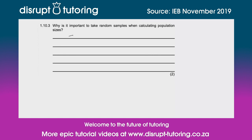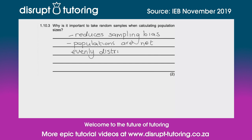The first reason that should strike you is that random sampling reduces sampling bias, so that you don't bias all your data and you're not focusing on one specific region. Second, the populations are not evenly distributed.